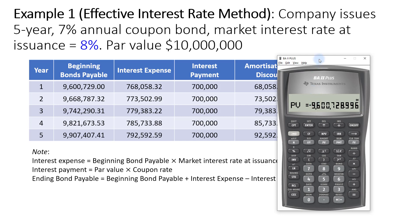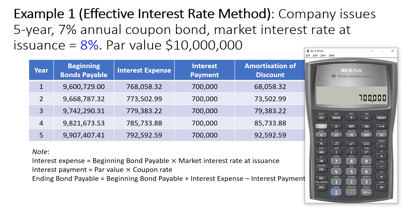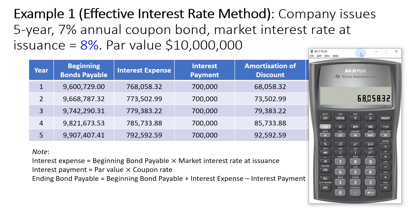Next, we are going to calculate the interest expense. Based on the effective interest rate method, the interest expense will be based on the beginning bond payable or beginning carrying value, which is $9,600,729. We multiply that by the market rate at issuance of 8%, so we get $768,058.32. We then subtract the interest payment of $700,000, and that gives us the discount amortization amount of $68,058.